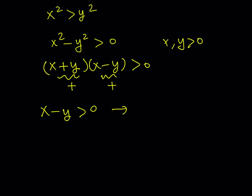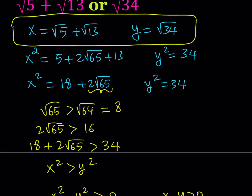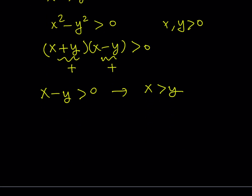This implies that x is greater than y. What is x? What is y? Let's go back and substitute. x is equal to square root of 5 plus square root of 13. So this gives us that square root of 5 plus square root of 13 is greater than the square root of 34.